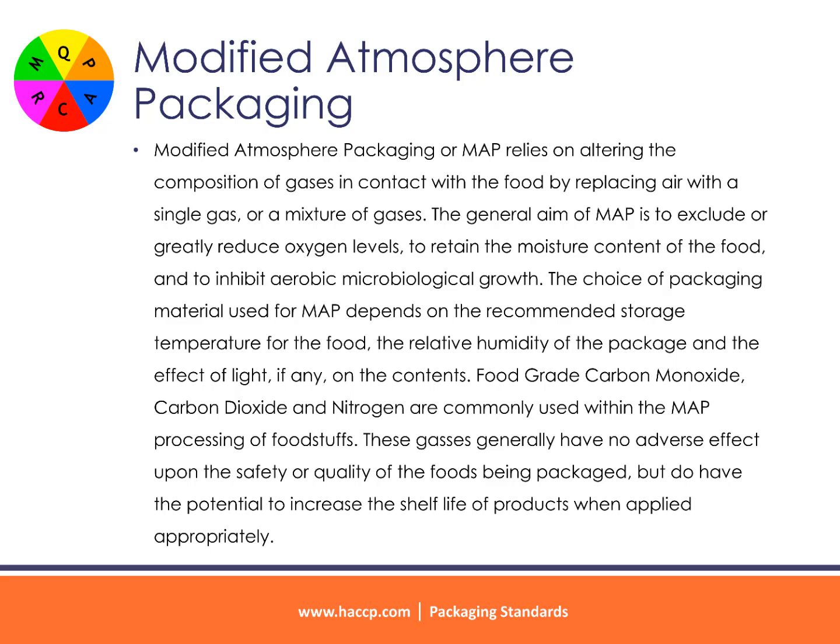Modified Atmosphere Packaging (M.A.P.) relies on altering the composition of gases in contact with the food by replacing air with a single gas or a mixture of gases. The general aim of M.A.P. is to exclude or greatly reduce oxygen levels, to retain the moisture content of the food, and to inhibit aerobic microbiological growth. The choice of packaging material used for M.A.P. depends on the recommended storage temperature for the food, the relative humidity of the package, and the effect of light, if any, on the contents. Food-grade carbon monoxide, carbon dioxide, and nitrogen are commonly used within M.A.P. processing of foodstuffs. These gases generally have no adverse effect upon the safety or quality of the foods being packaged but do have the potential to increase the shelf life of products when applied appropriately.